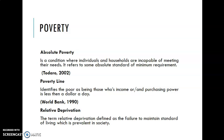The poverty line identifies the poor as those whose income or purchasing power is less than a dollar a day. When someone has income less than a dollar a day and their purchasing power is very weak, that is called the poverty line. This definition was described by the World Bank in 1990.